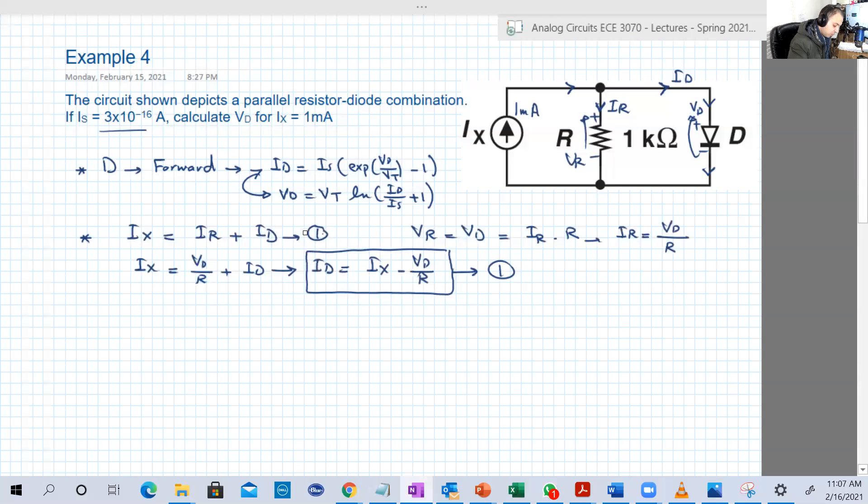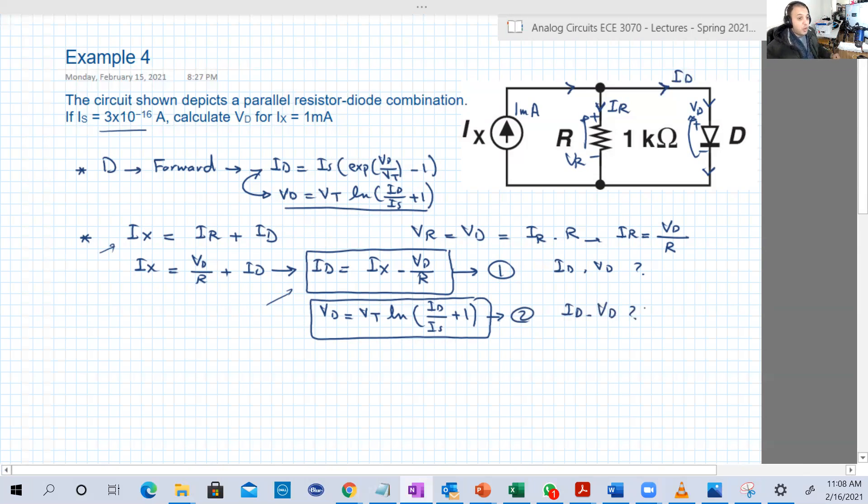Ix equals IR times R, so IR can be written as Vd over R. So Ix equals Vd over R plus ID. From this, ID equals Ix minus Vd over R. We will use this in our solution rather than the first form. This equation and this equation are just equal to each other, we just rearrange and substitute. What other equations can we use? This is equation one with two unknowns: ID is unknown, Vd is unknown. The second equation luckily is Vd equals Vt ln ID over IS plus one.